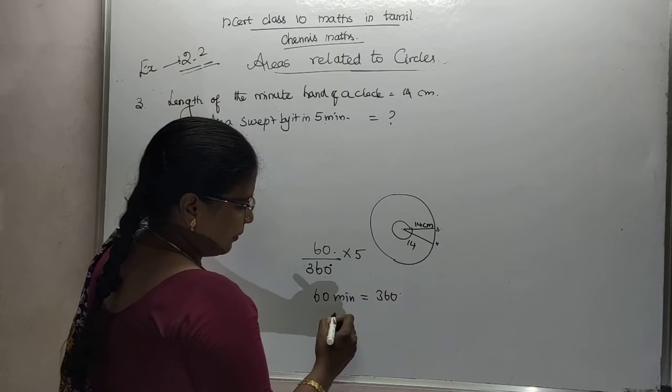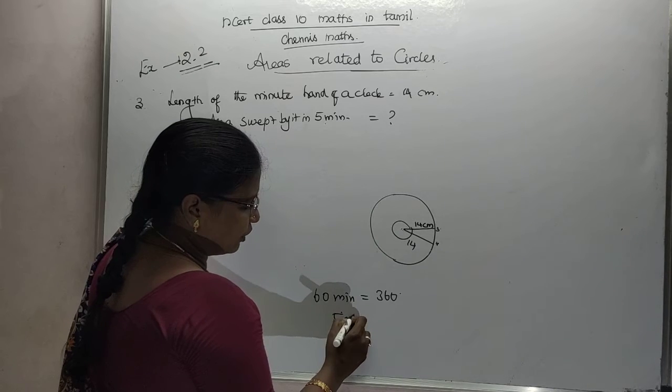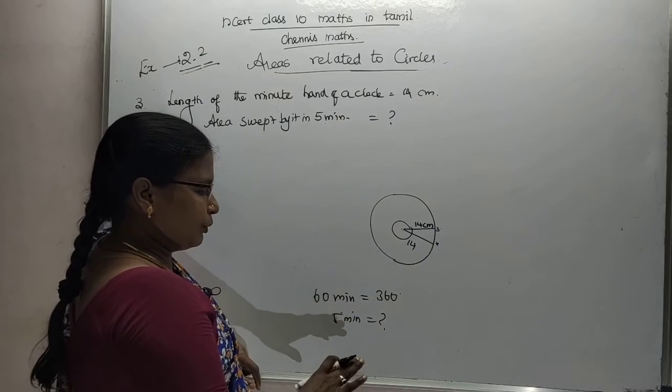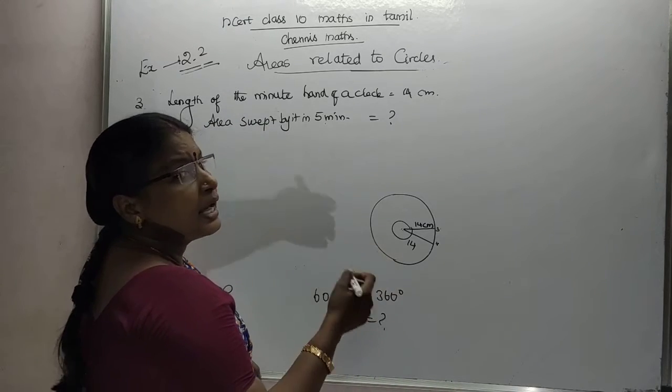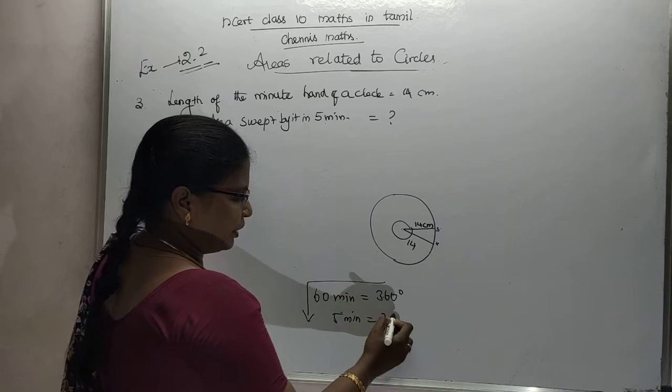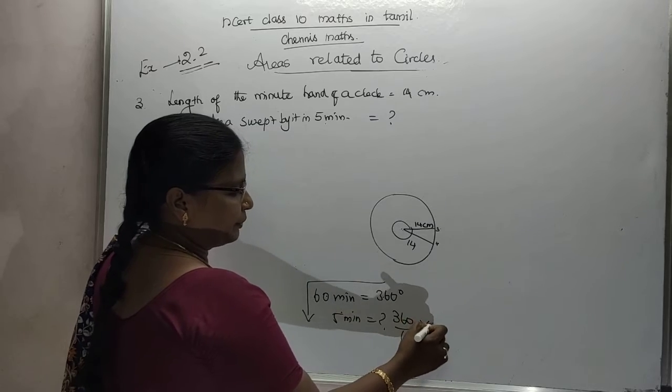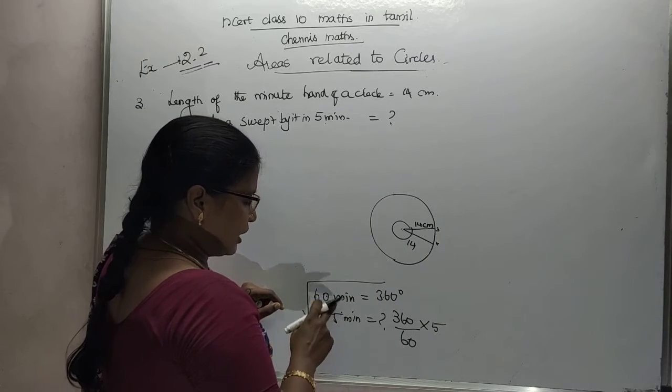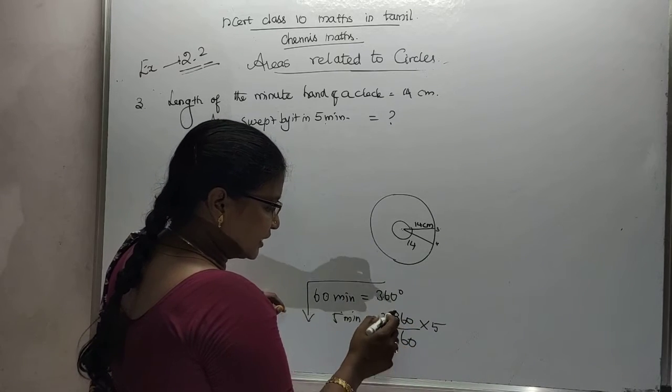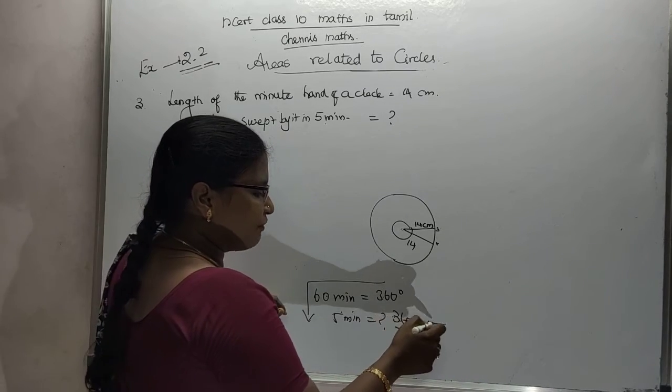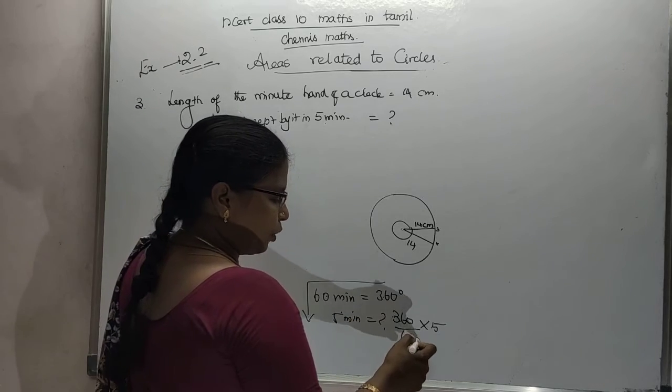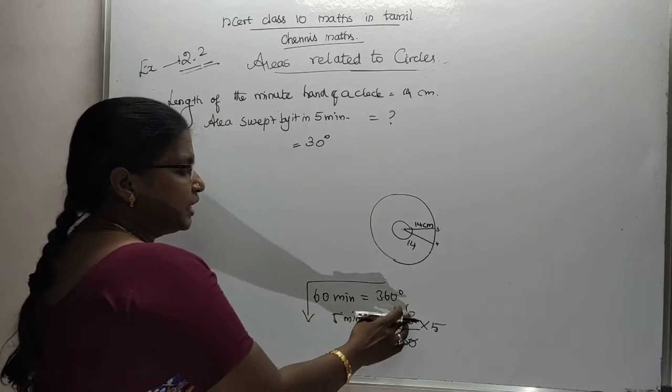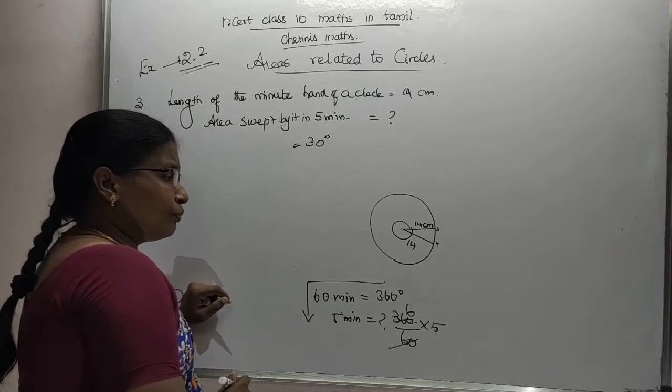Then 5 minutes - 360 degrees divided by 60 into 5. 60 minutes is 360 degrees, then 5 minutes, that's why 30 degrees. 6 times 5 is 30 degrees. How many degrees it is rotating for 5 minutes? 30 degrees. 5 minutes equals 30 degrees.